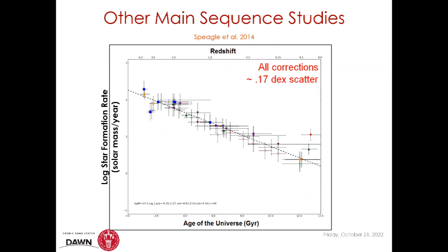What we found is if you just pick the same IMF—we picked a Chabrier IMF—suddenly all these studies agree. The real takeaway is that everything we get out of these galaxies comes very strongly from the assumption that icebergs are made of the same type of ice, and the stellar initial mass function is going to change all of the key conclusions that we get from analyzing distant objects.